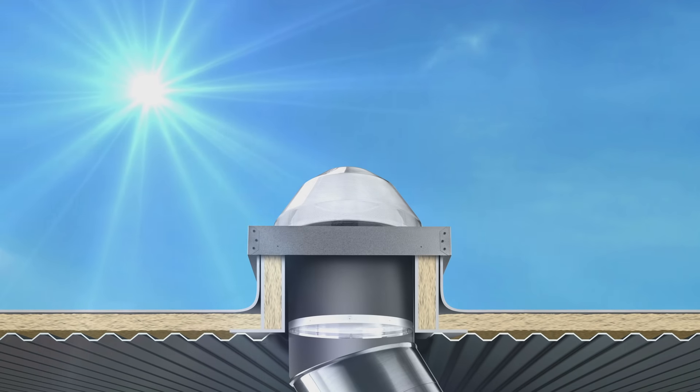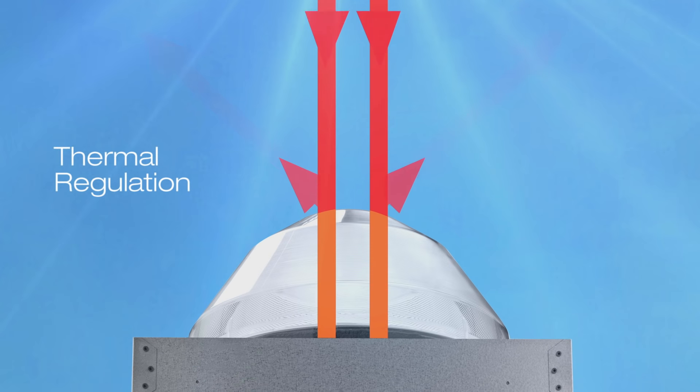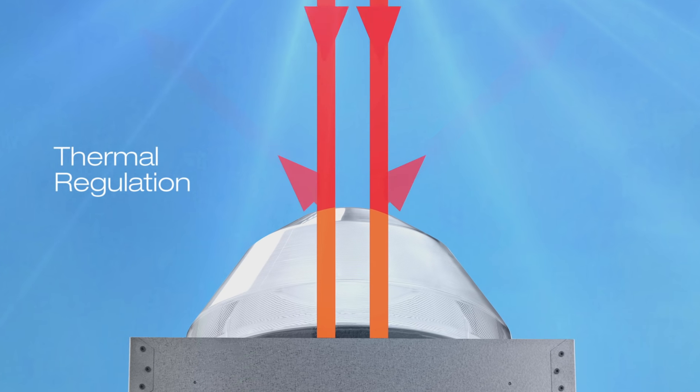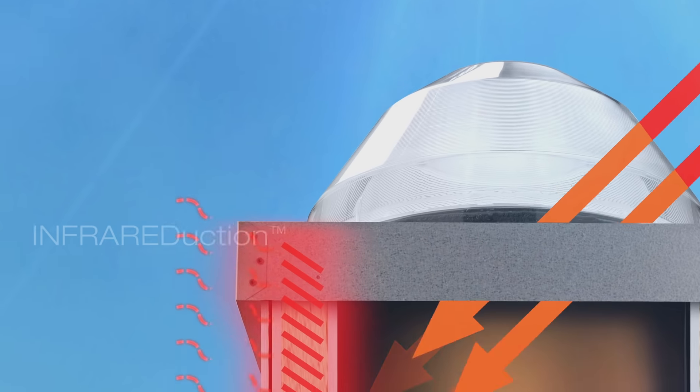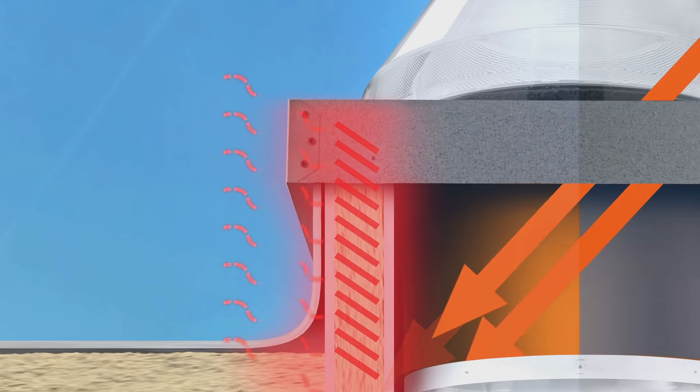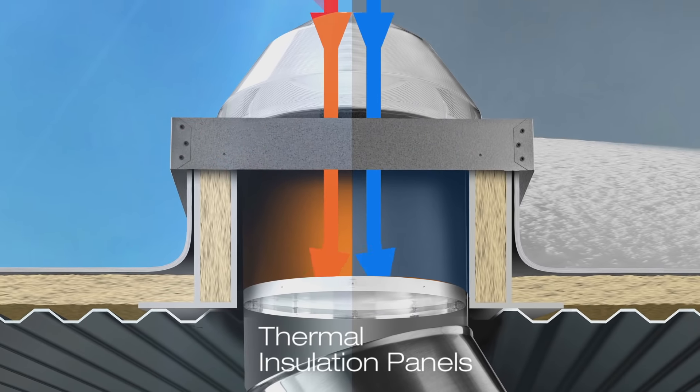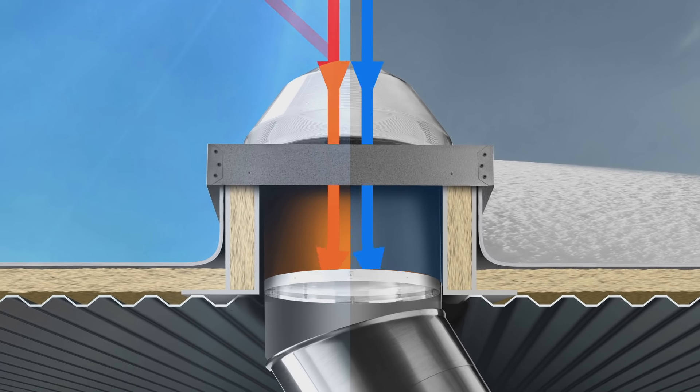And the control we provide isn't just about the level of light. Our technologies also provide total thermal regulation, from domes that reject overpowering summer mid-day light and block UV rays, to our breakthrough infrared reduction technology which uses a proprietary process to filter out infrared wavelengths, to thermal insulation panels that keep both heat and cold from moving through the system into the building's interior.